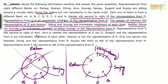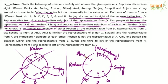The representative from C sits second to the right of Anvi, and Anvi is neither the representative of D nor G. So Anvi cannot occupy those two positions. Of the remaining open positions, if Anvi were placed in one of them, second to the right would land on G — which is already taken — so Anvi must take the other position. C then falls second to the right of Anvi and is fixed.